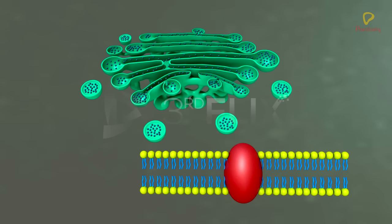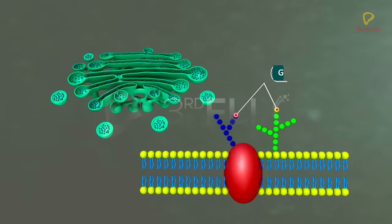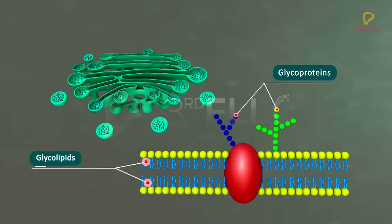Golgi apparatus is the important site of formation of glycoproteins and glycolipids.